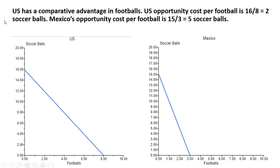Starting with footballs, we're going to show that the US has a comparative advantage in footballs. The opportunity cost in the United States per football is going to be 16 divided by 8, or two soccer balls. To find the opportunity cost of producing one more thing on the x-axis, it's simply the vertical intercept, 16, divided by the horizontal intercept, 8. So 16 divided by 8 is 2, and that gives us the opportunity cost of producing one more football.